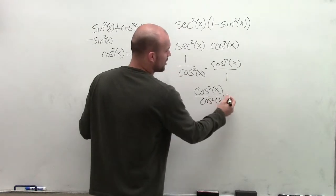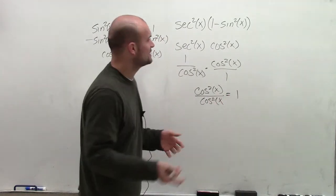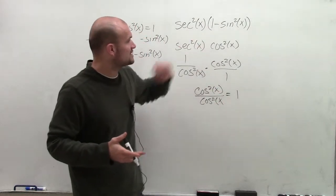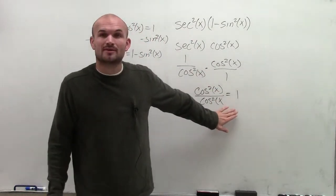So now when I multiply them across, I get the cosine squared of x divided by the cosine squared of x, which we know is going to equal 1. So therefore, the simplified expression is now going to end up with 1.